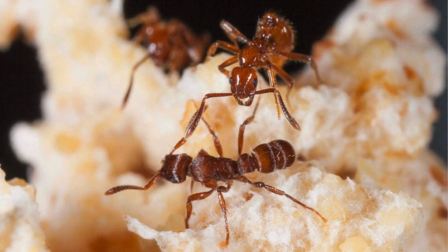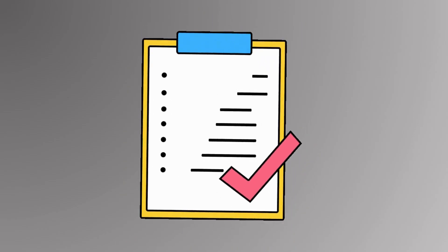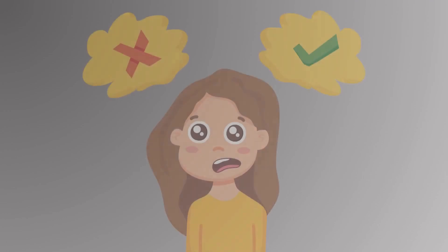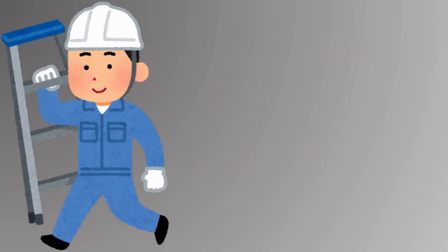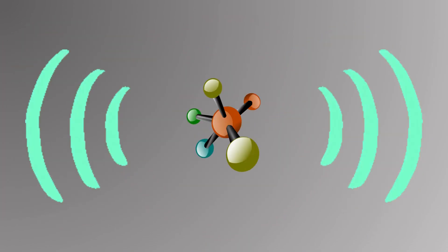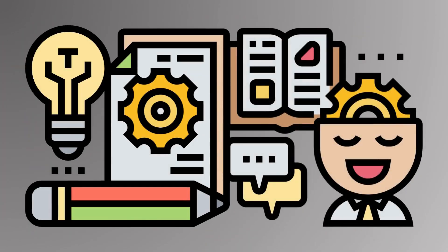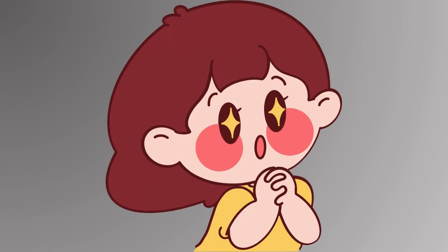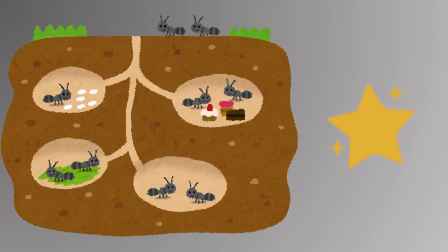Task allocation: Insects like honeybees decide their role - worker, guard, forager - based on age, environmental needs, and pheromone signaling. This adaptability reflects a basic form of problem-solving for the colony's success.